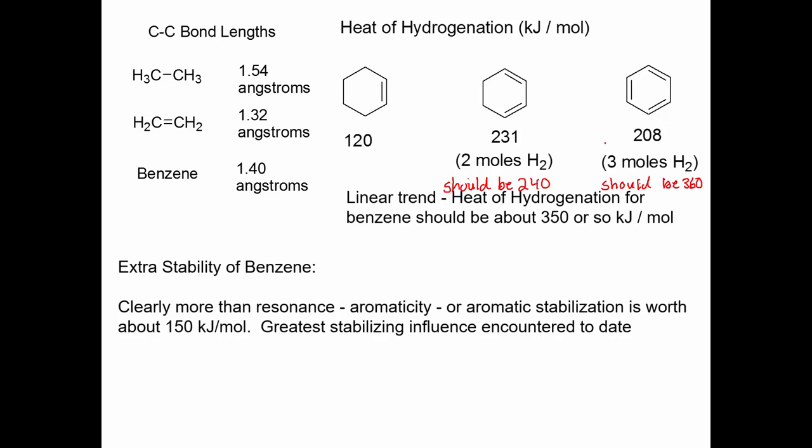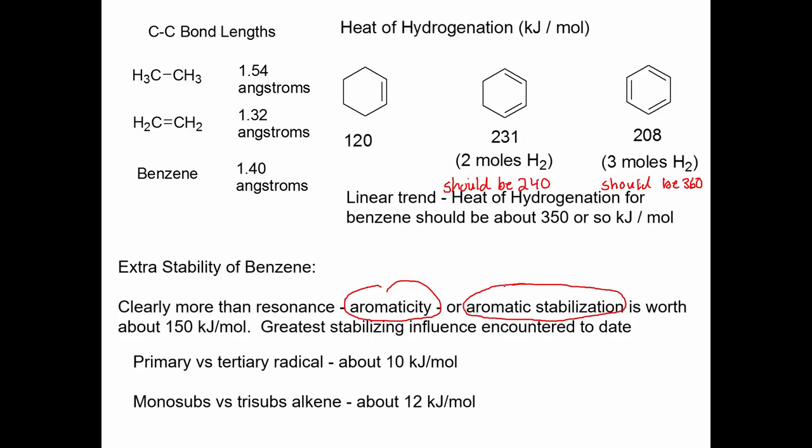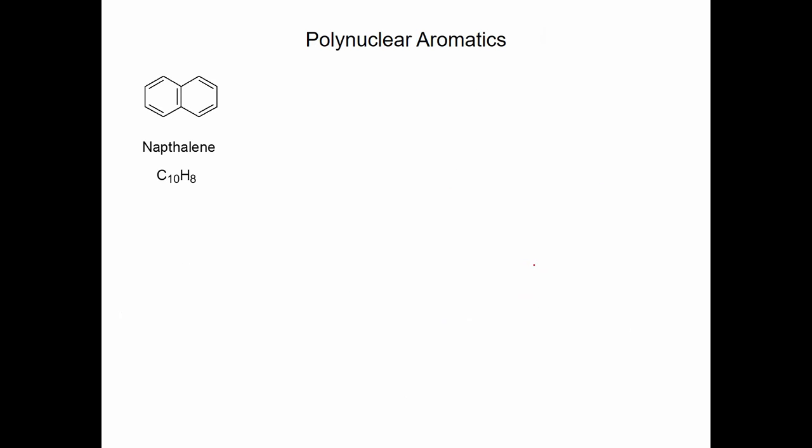This stabilization of the benzene ring we're going to refer to as aromaticity. Aromaticity or aromatic stabilization is worth about 150 kilojoules per mole. This is the biggest stabilizing influence or stabilizing factor you've seen in this class to date. Let's compare it with some other things. If we compare isomeric free radicals where one is primary and one is tertiary, the difference is only about 10 kilojoules per mole. If we look at a monosubstituted versus a tri-substituted alkene, their energy difference is only about 12 kilojoules per mole. So aromaticity, we can say, is a huge stabilizing influence. It outdoes virtually everything, or it outdoes every stabilizing factor that we've seen to date.